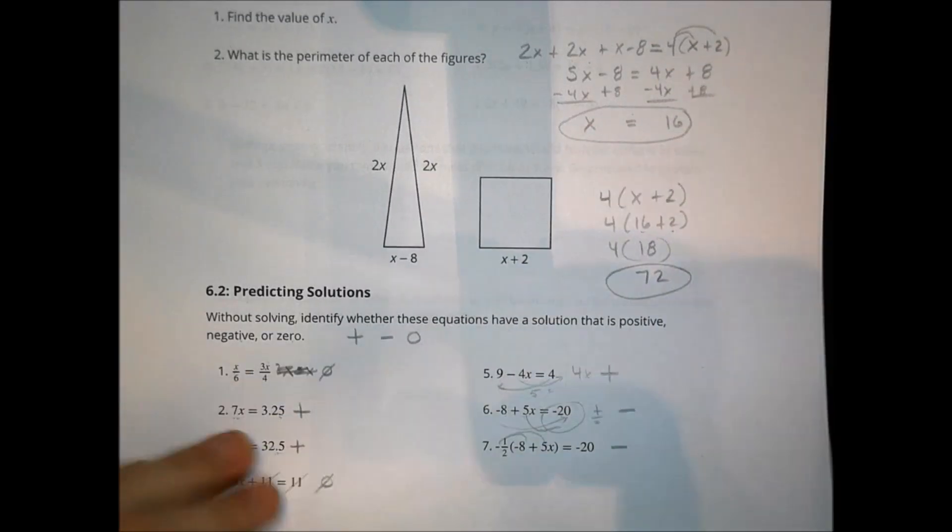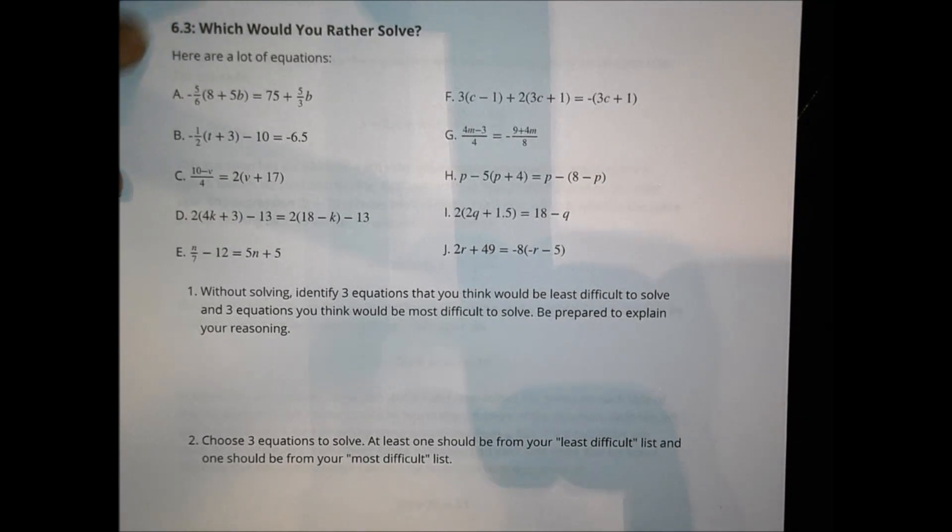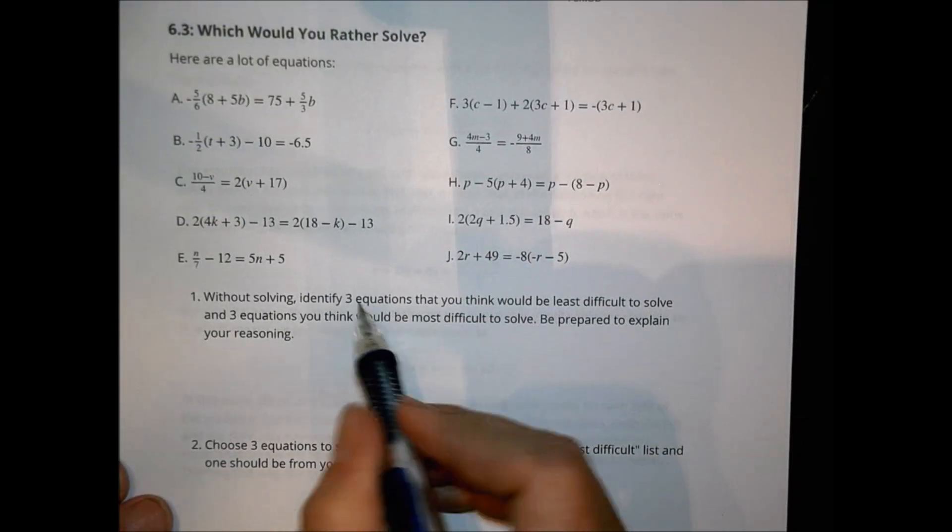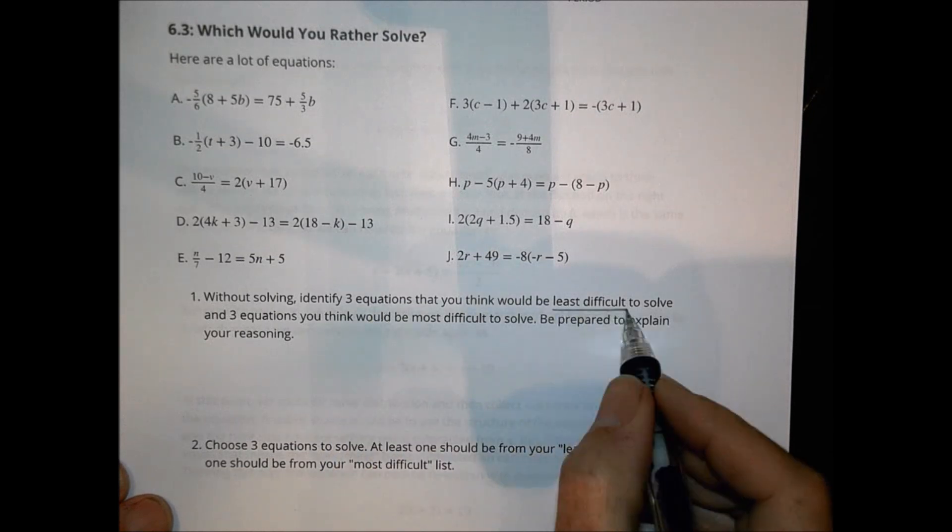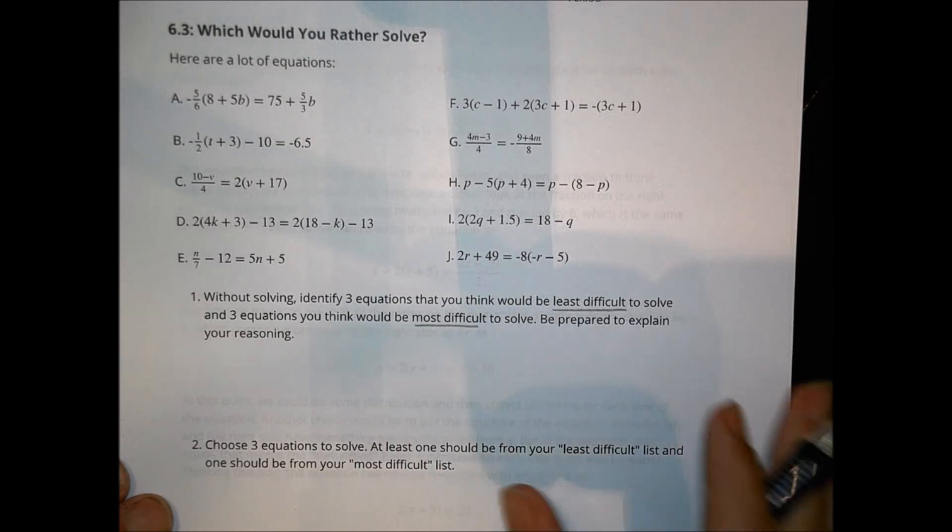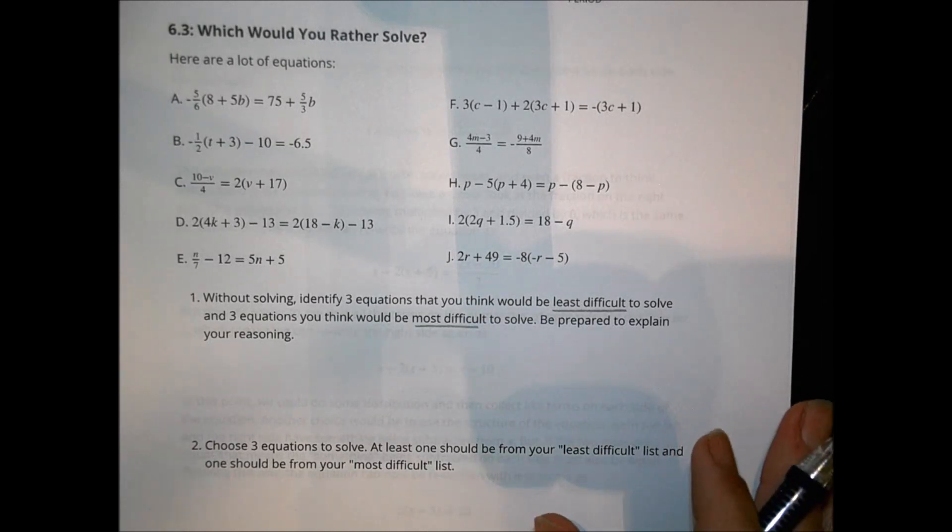Let's look at the next activity. Less than 16. It says here are a lot of equations. Which would you rather solve? And what I want you to do is that you decide three equations you think could be the least difficult, and three that would be the most difficult to solve, and then be prepared to explain your reasoning for why you think one is harder or easier.